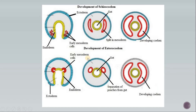On the basis of development, schizocoelom shows early endoderm, early ectoderm, and early mesodermal cells that split to form a coelom — this is the schizocoelous type. In the enterocoelous type there is early ectoderm, early endoderm, and connection of mesoderm with the archenteron or gut. Separation of pouches of mesoderm from the gut forms into the development of the coelom — this is called the enterocoelous type of animal.